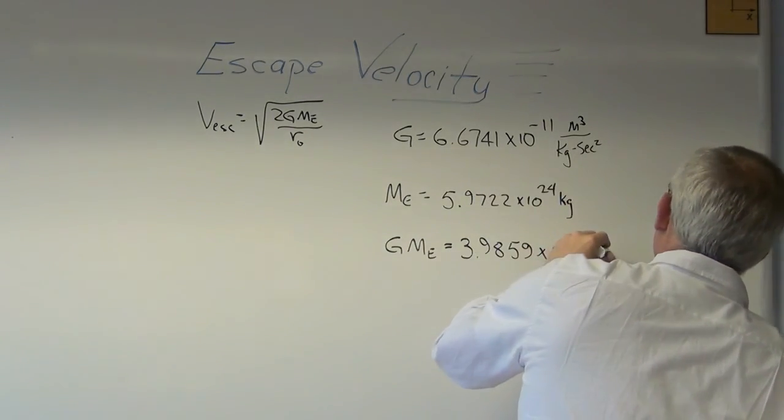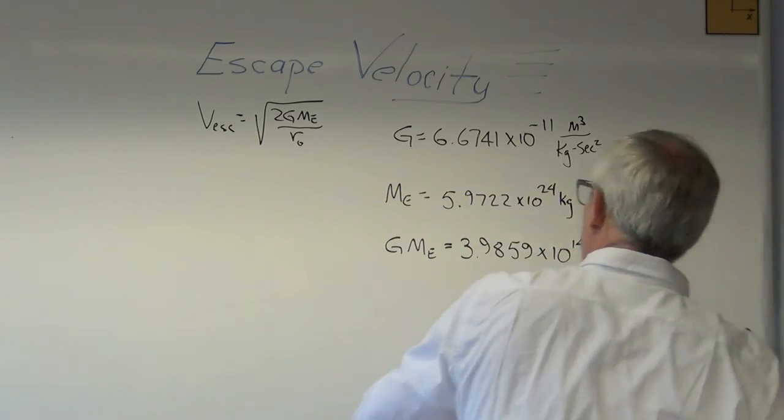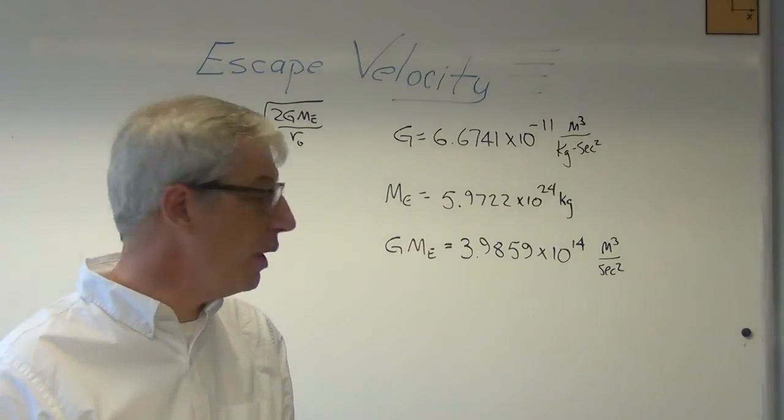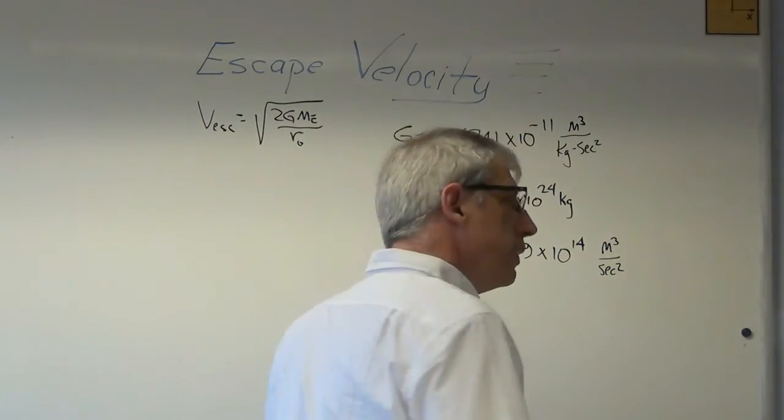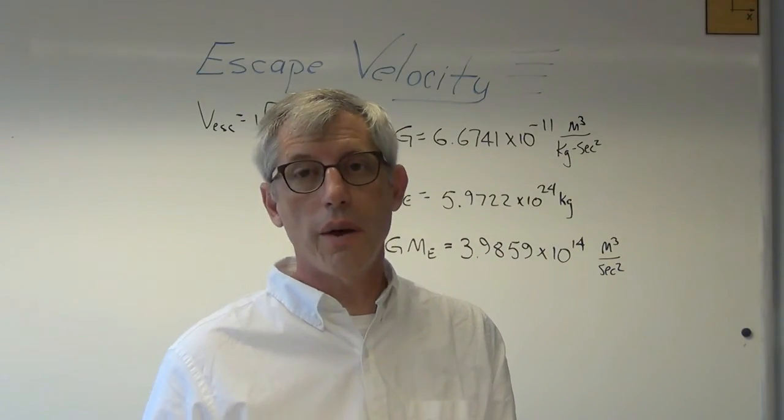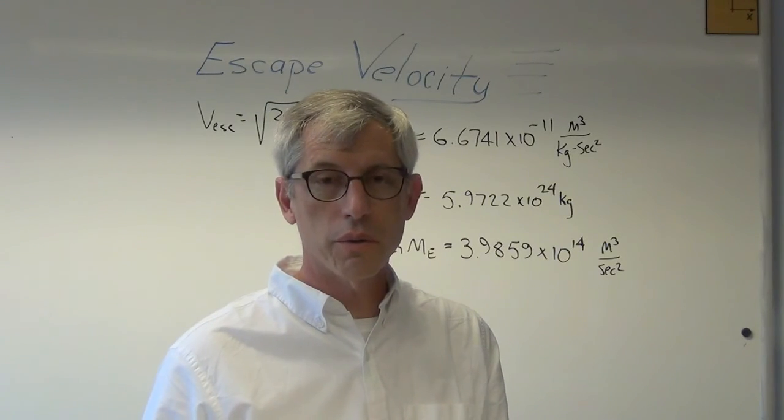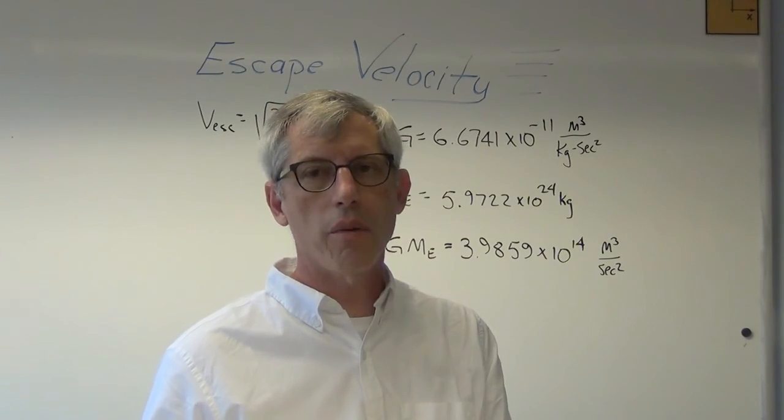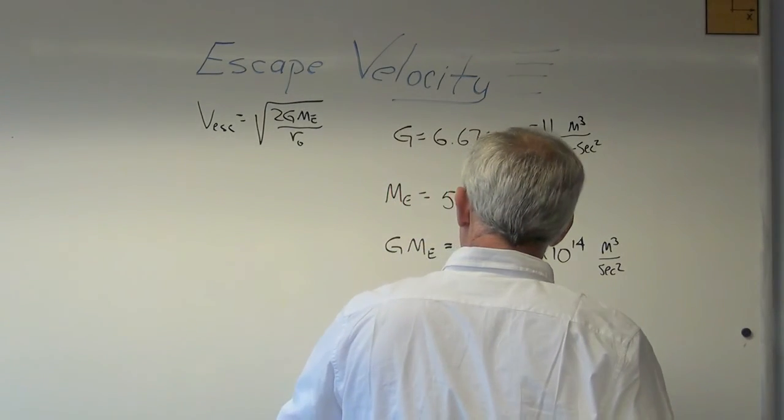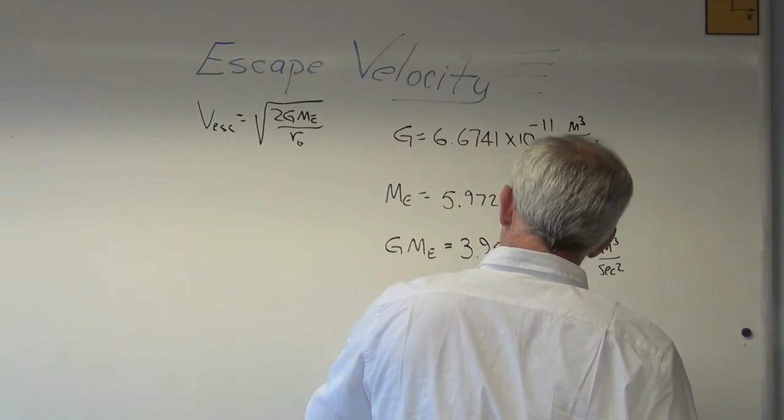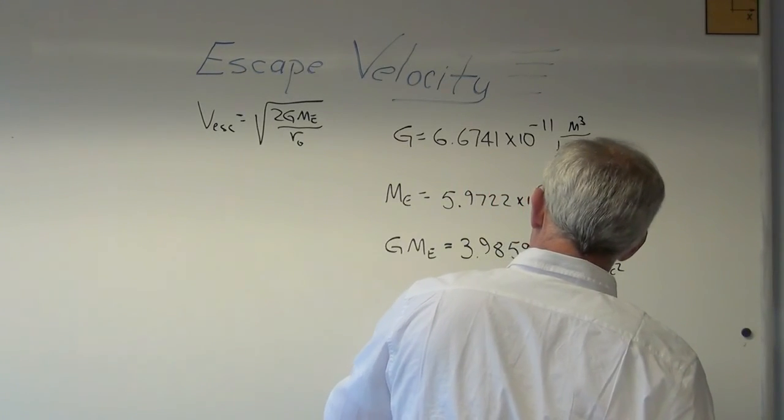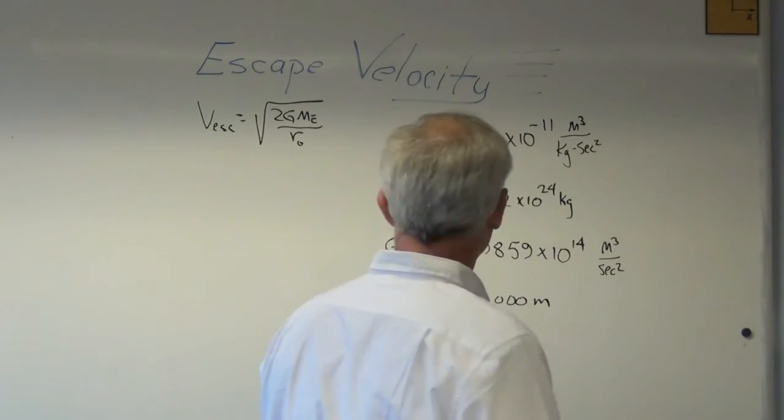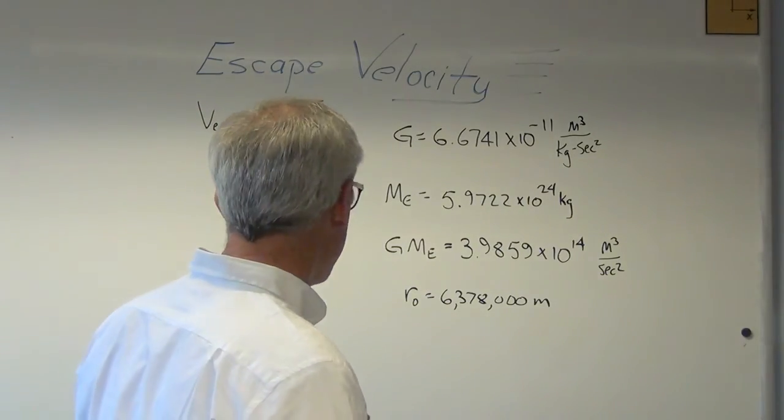And again, the units are kind of funny. So last thing I need is the radius of the earth. Well, the radius of the earth is not exactly a sphere. We've known that for a surprising amount of time. We've known the radius of the earth. We've also known that it's not exactly round, but it's pretty close. So for our purposes, we can say the radius of the earth is 6,378 kilometers or 6,378,000 meters. We've known that for quite some time too.